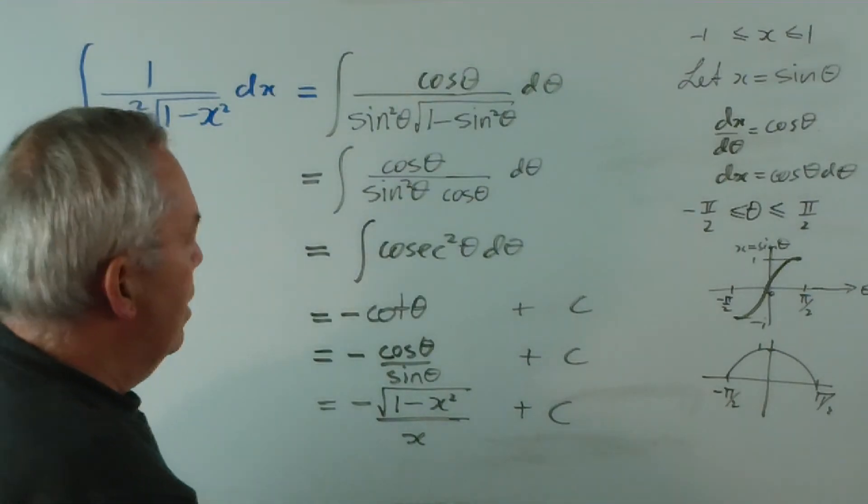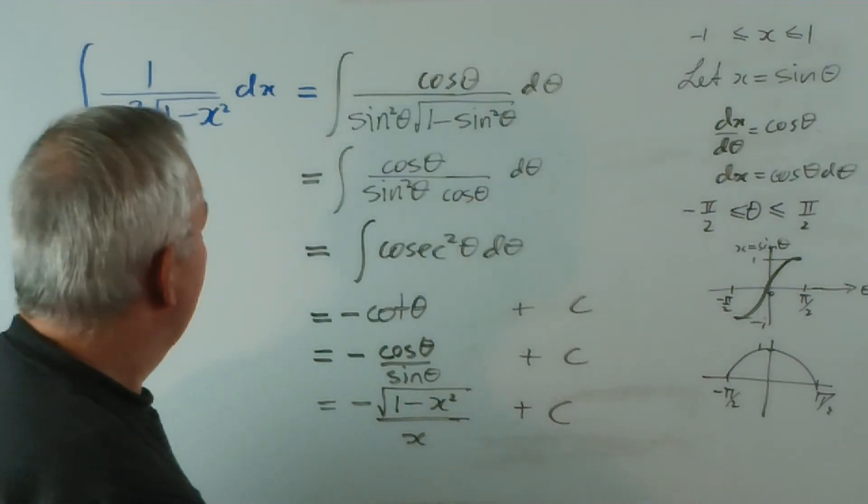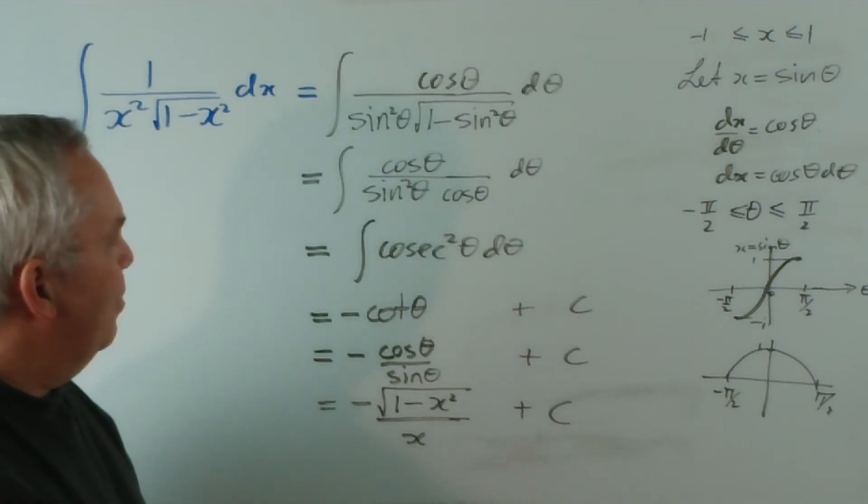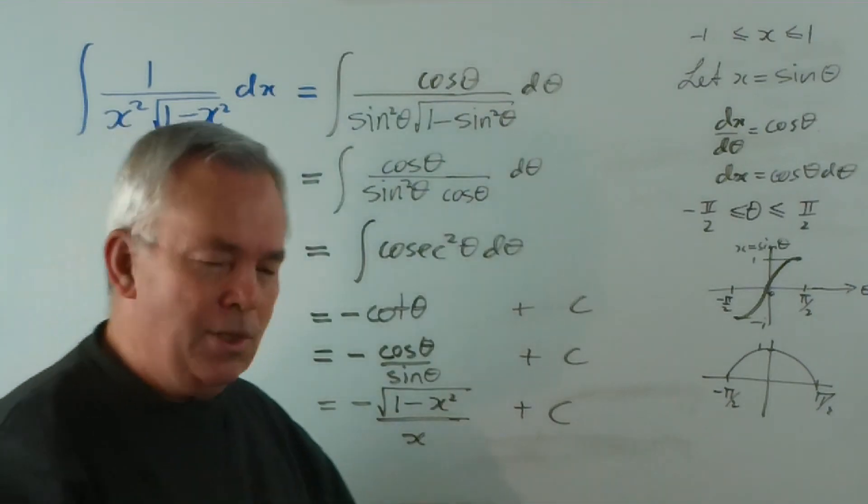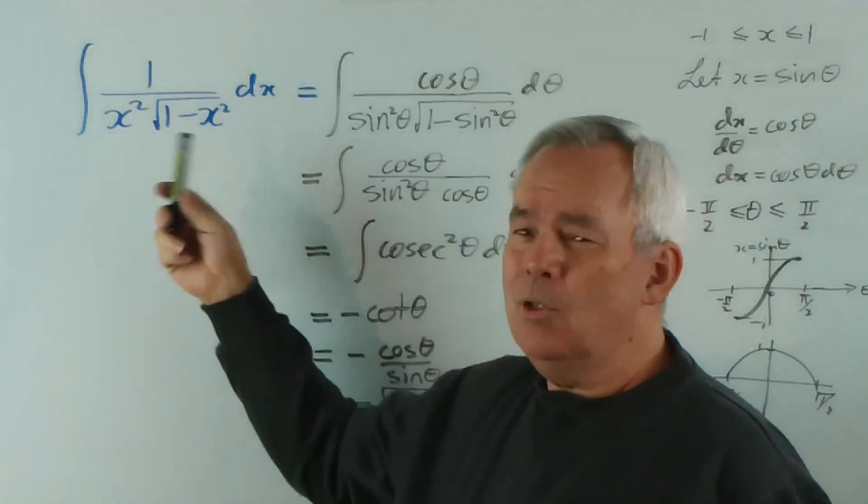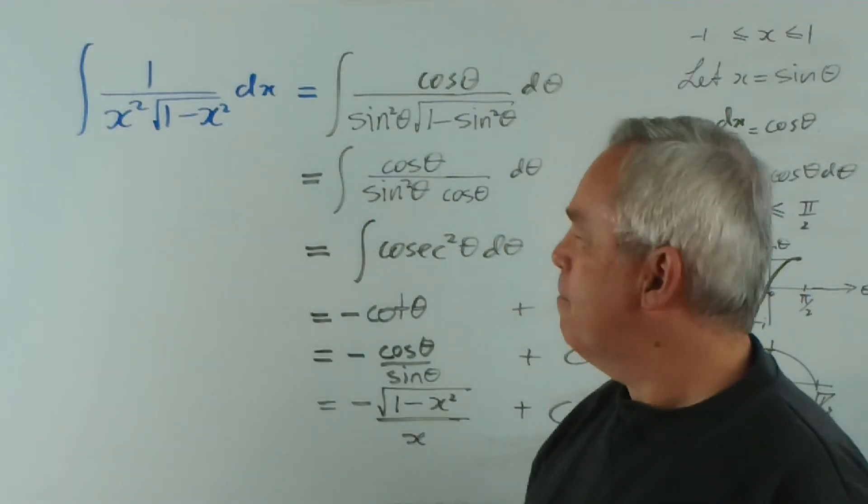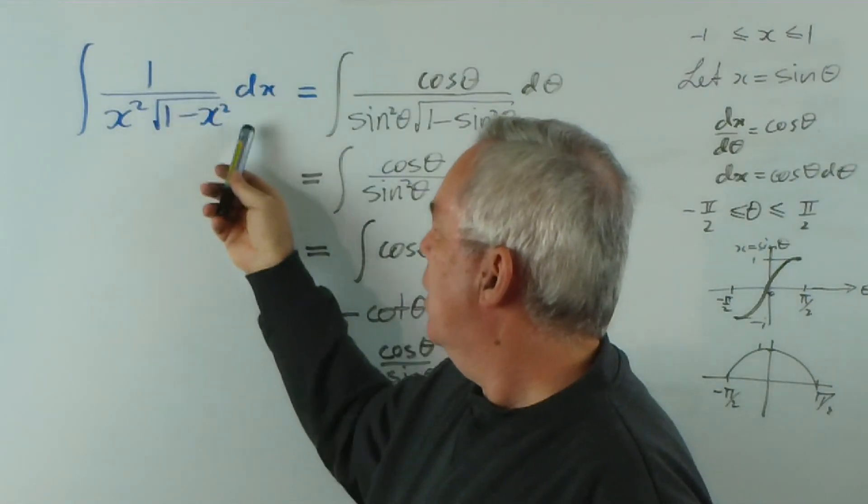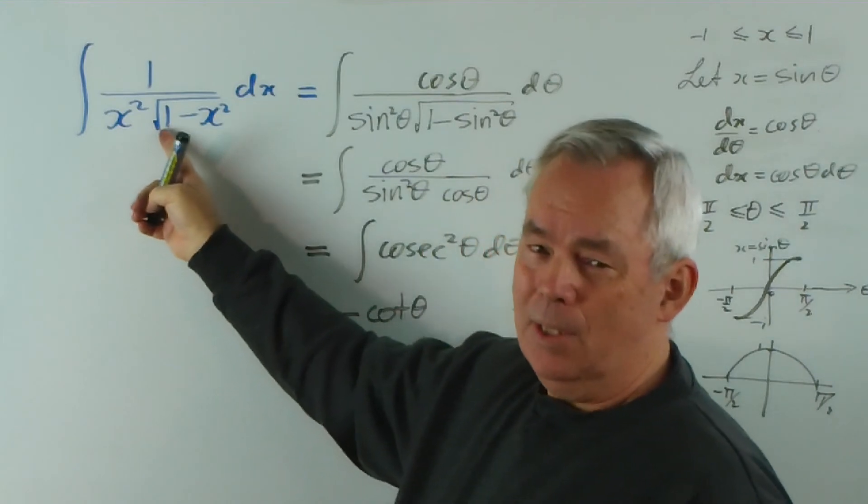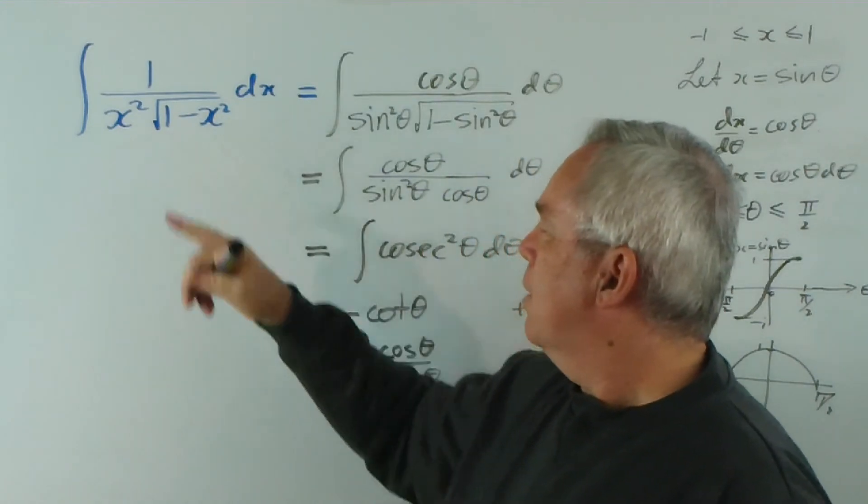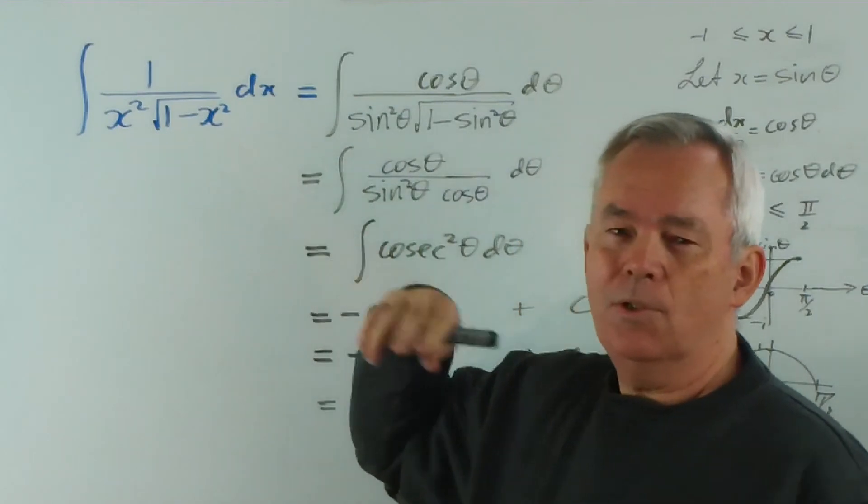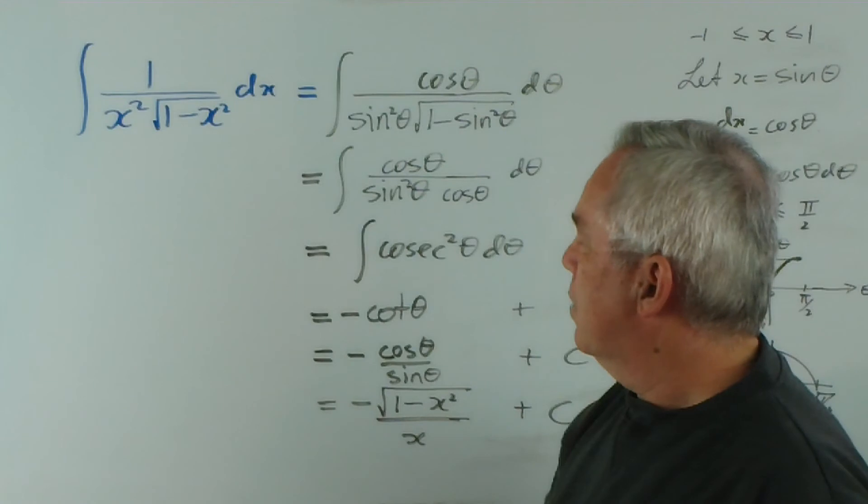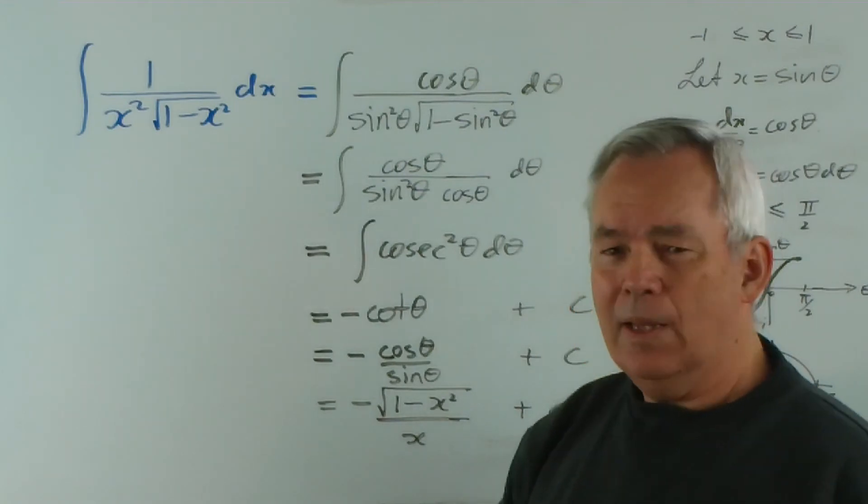So that was rather an interesting integral. You might feel you've been savaged a little bit by it. But just rehearsing very quickly, none of the normal patterns appeared to apply. And, generally speaking, to simplify or resolve something inside a radical, particularly in the denominator, or even in the numerator for that matter, sometimes a substitution, a trigonometric substitution, is worthwhile. And I hope you've found that valuable.